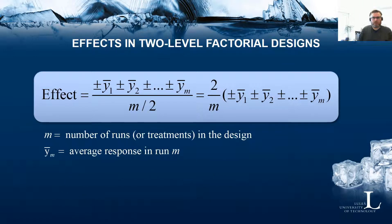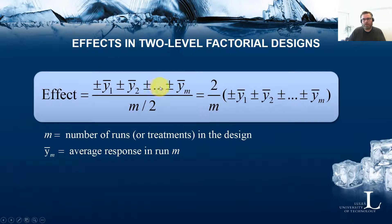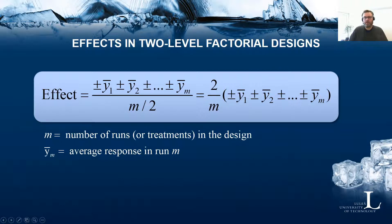In general, the effects of a two-level factorial design can be calculated according to this formula. We take the sum of the responses — or the sum of the average responses if we have replicates — for each treatment combination, and divide by m over 2 (equivalently, multiply by 2 over m). Here m is the number of runs or treatments in the design, and the plus and minus signs in the sum are determined by the column of the effect in the design matrix.